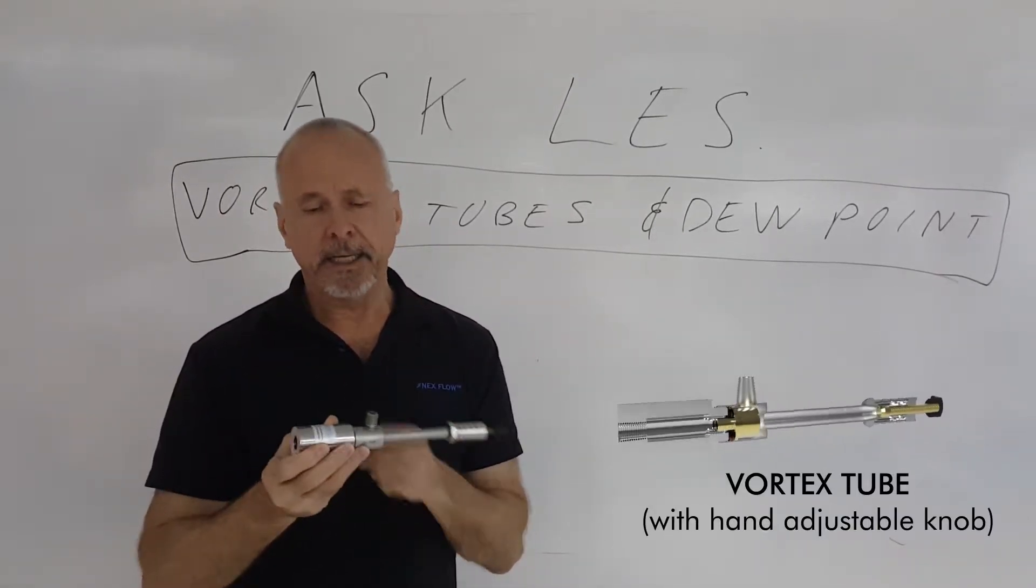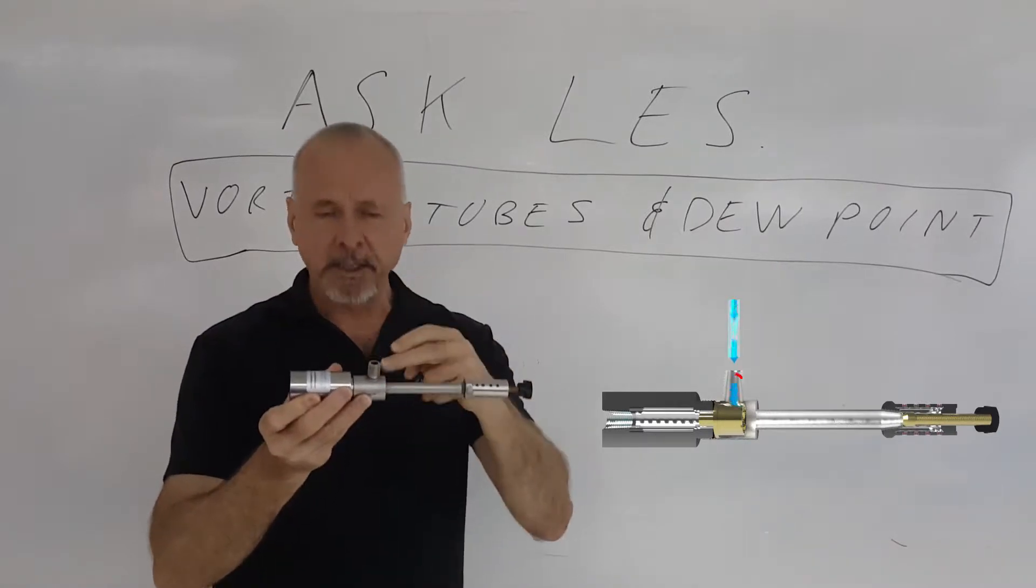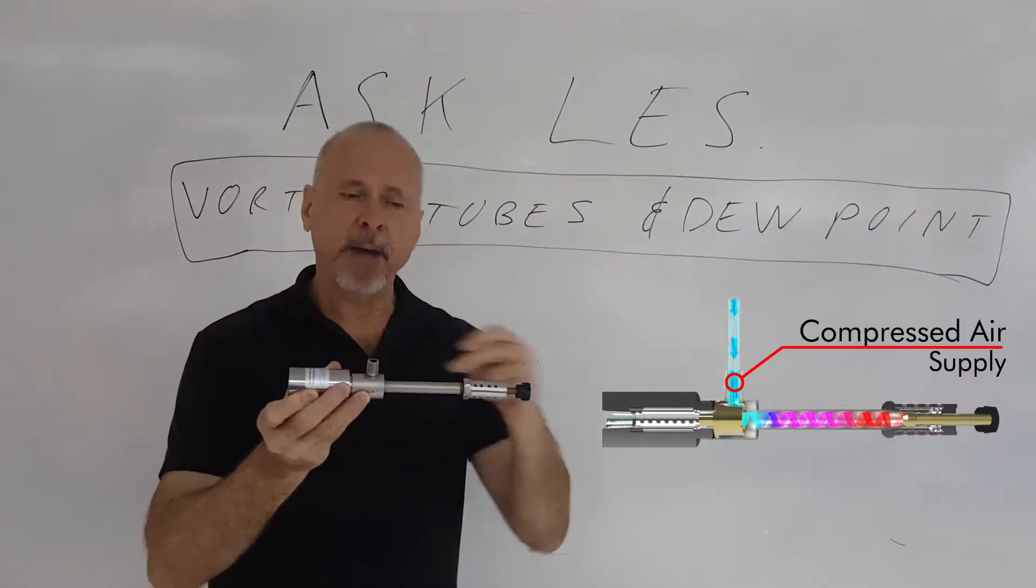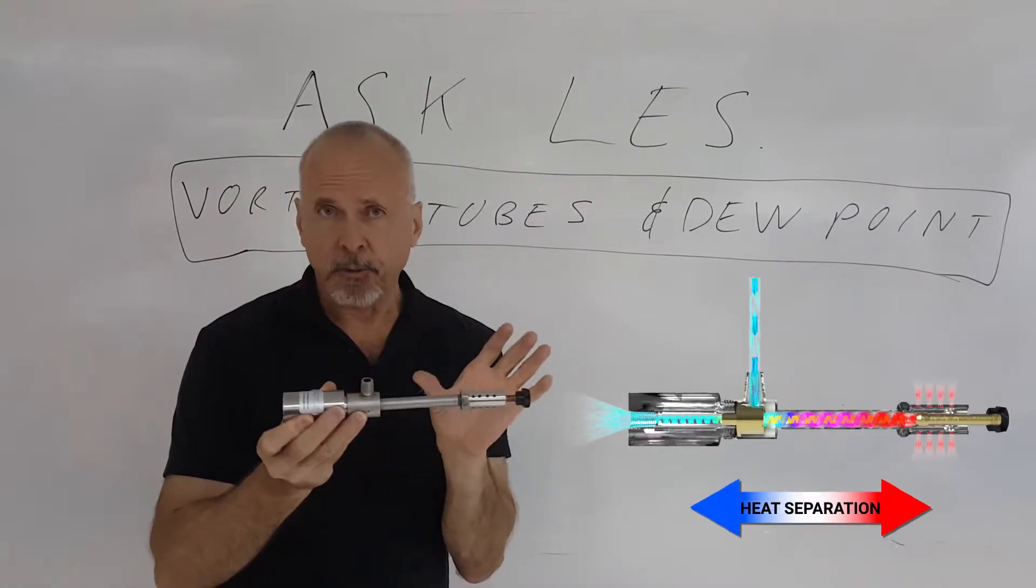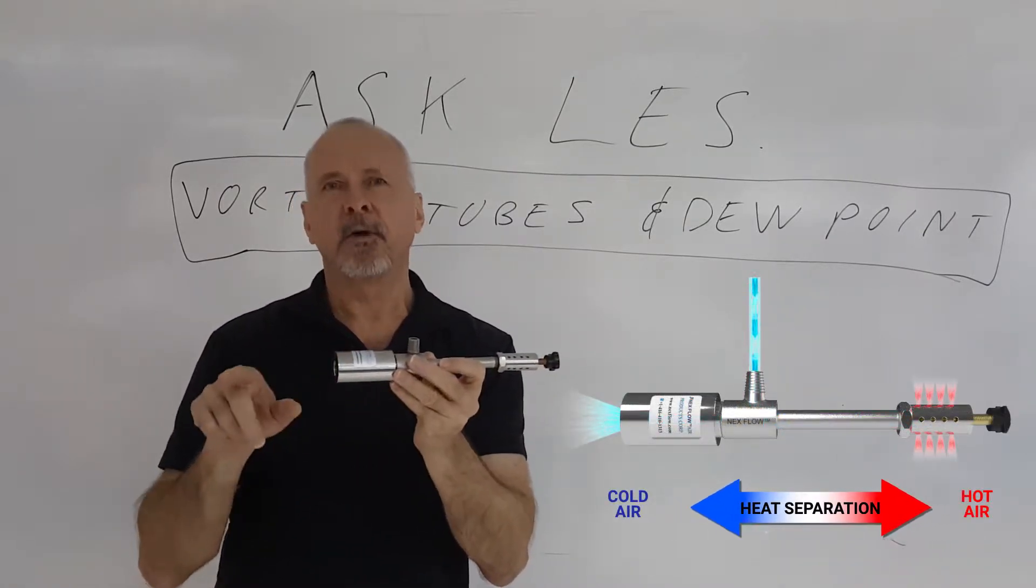A vortex tube is a device that takes compressed air, spins it one way and then spins it back inside itself another way, causing a heat separation where one end gets very cold.